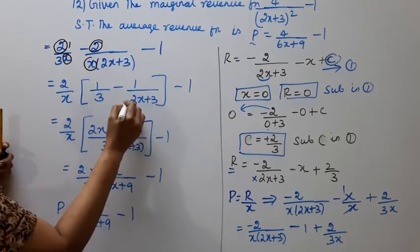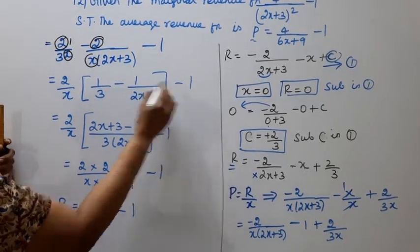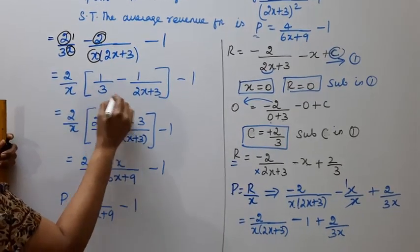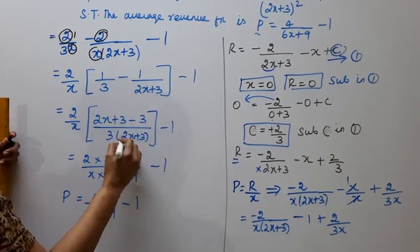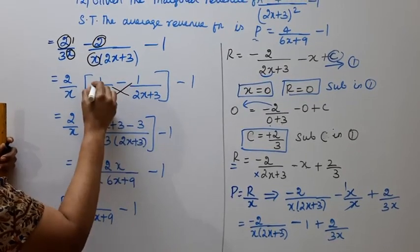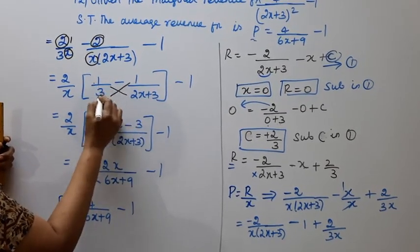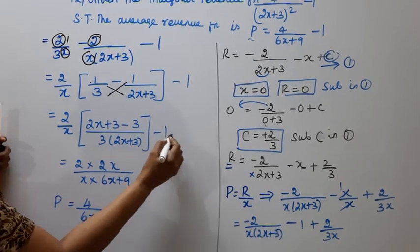Taking LCM: 3 times (2x+3), cross multiply to get [2x+3 - 3(2x+3) - 3]/[x(6x+9)].